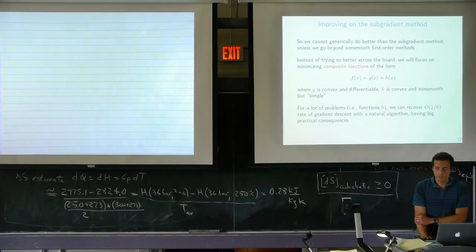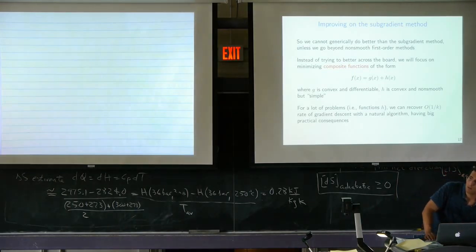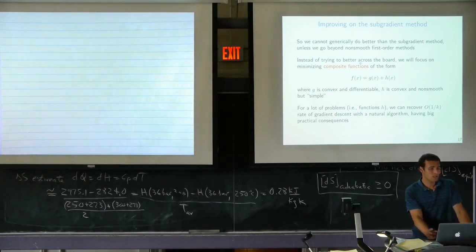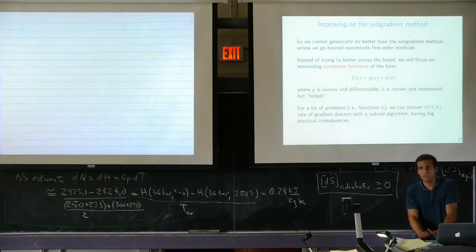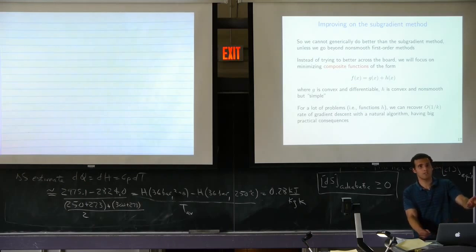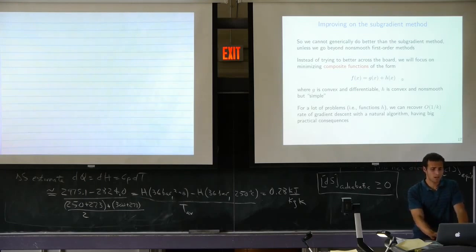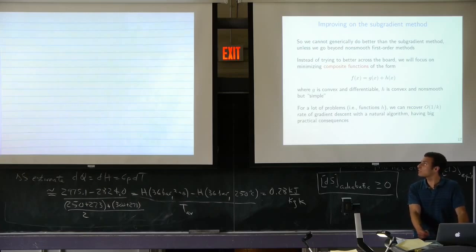To improve, we consider functions that aren't quite as general: functions that decompose as a sum of a convex smooth part and a convex non-smooth but simple part. These are called composite functions. We'll see we can do a lot better than subgradient method, both in theory and in practice. This has big practical consequences for problems in statistics and machine learning.